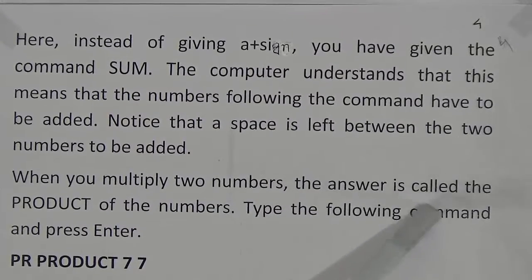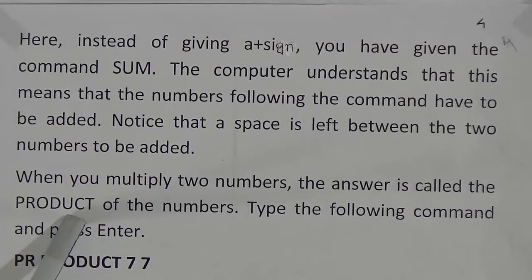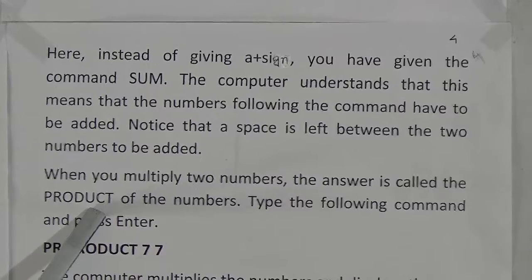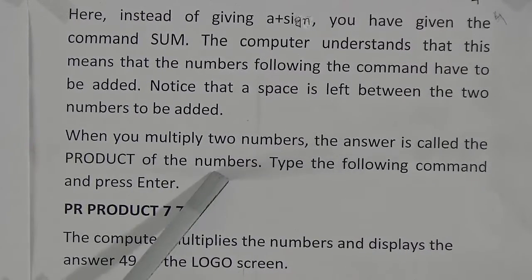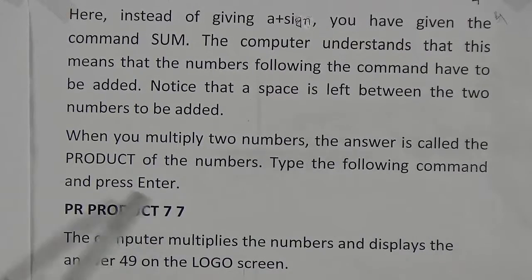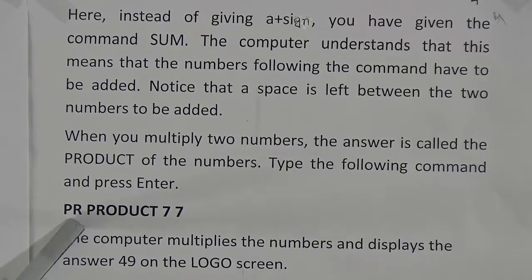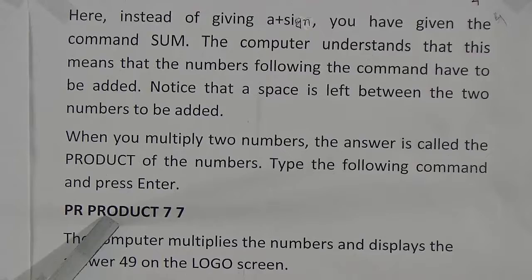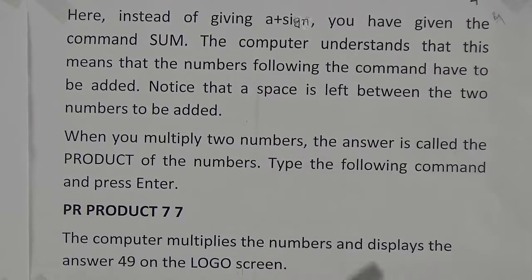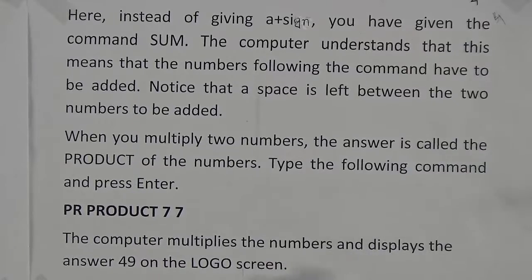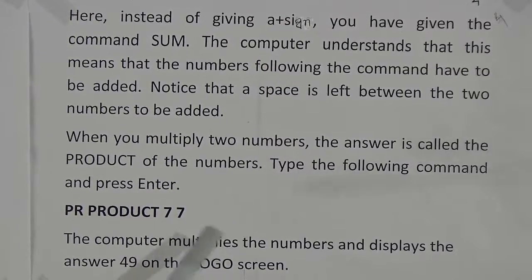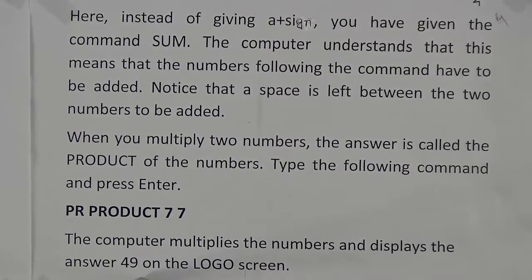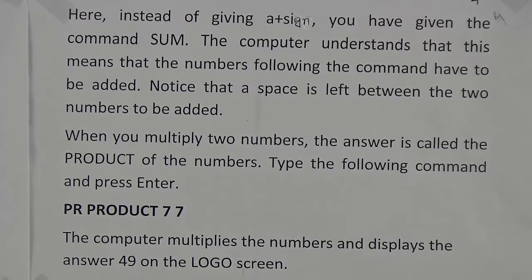When you multiply two numbers, the answer is called the product of the numbers. Type the following command and press Enter: PR PRODUCT 7 7. Note it is seven space seven, not 77. The computer multiplies the numbers and displays the answer 49 on the Logo screen — because 7 × 7 = 49.